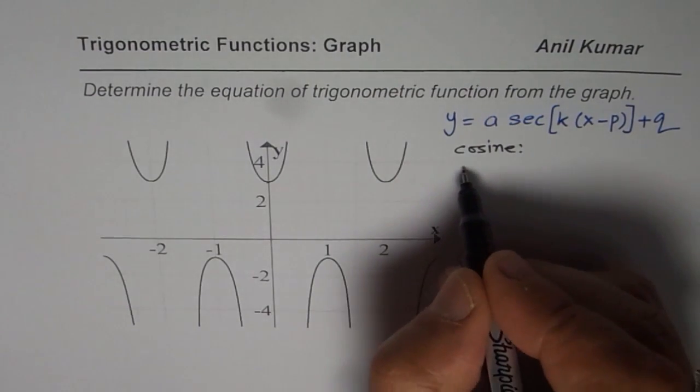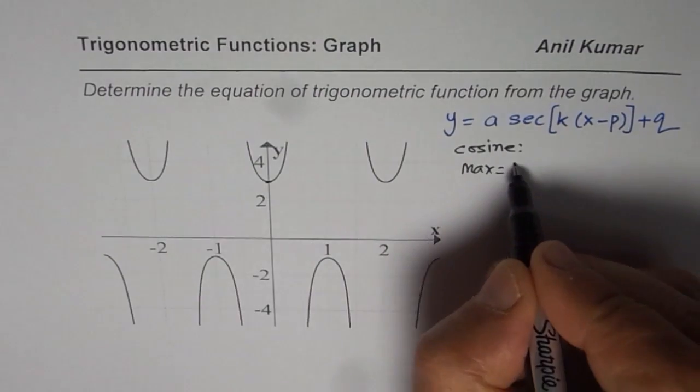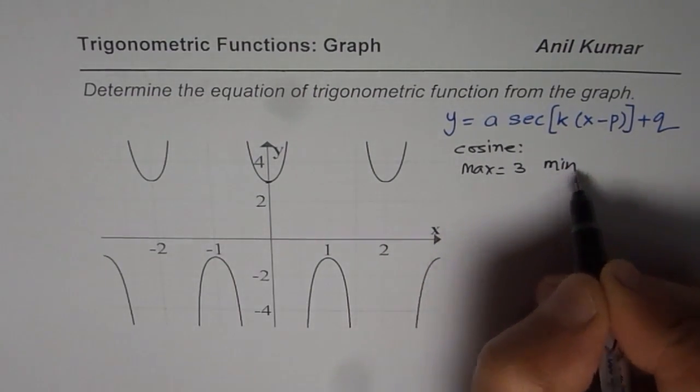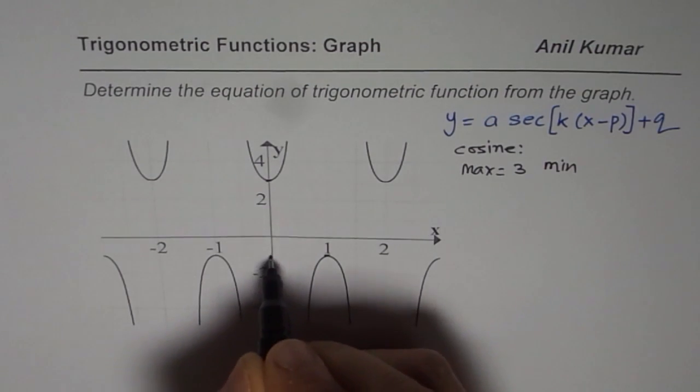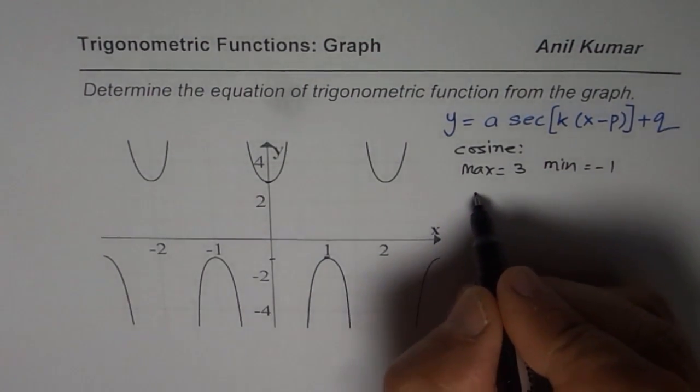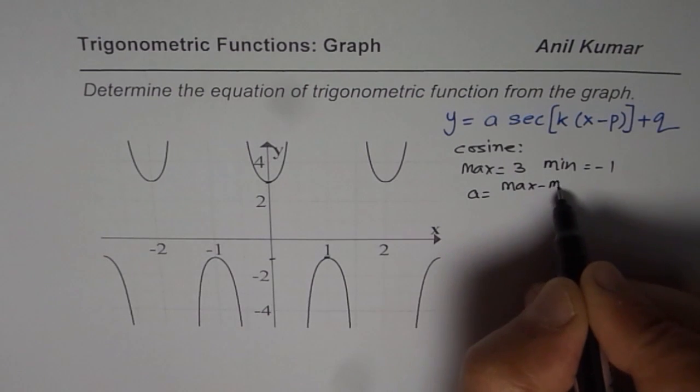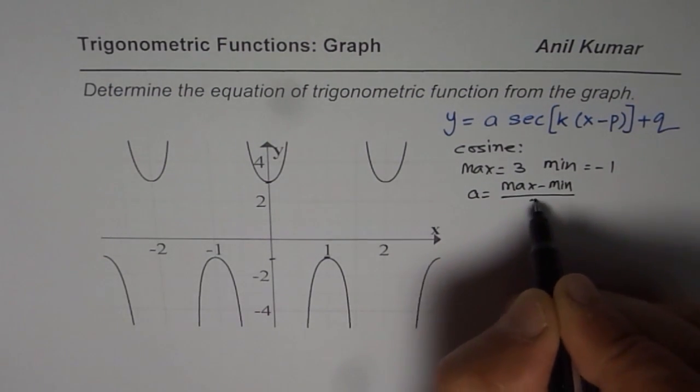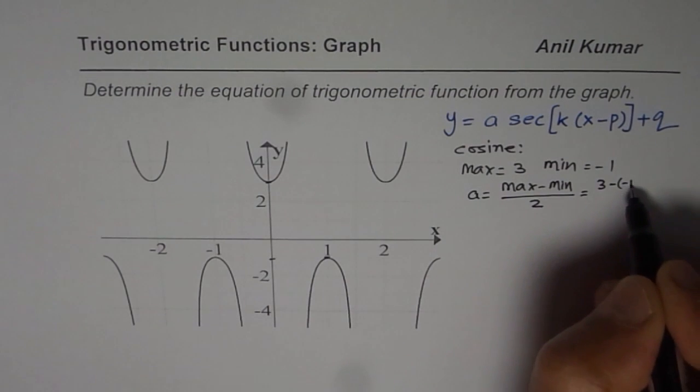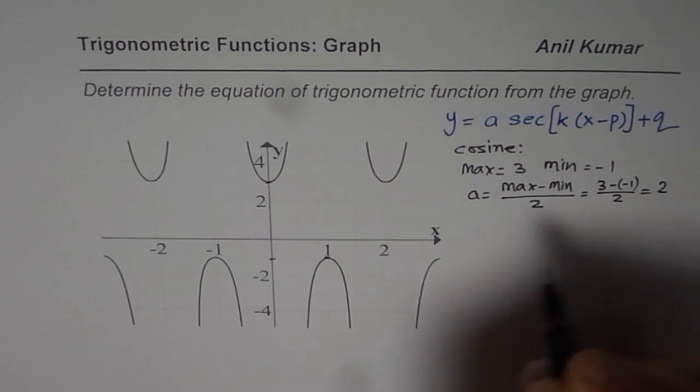For a cosine function maximum is at 3. Minimum value is at minus 1. So from there we get amplitude as maximum minus minimum divided by 2, which is 3 minus (−1) divided by 2 and that is 4 by 2 is 2.